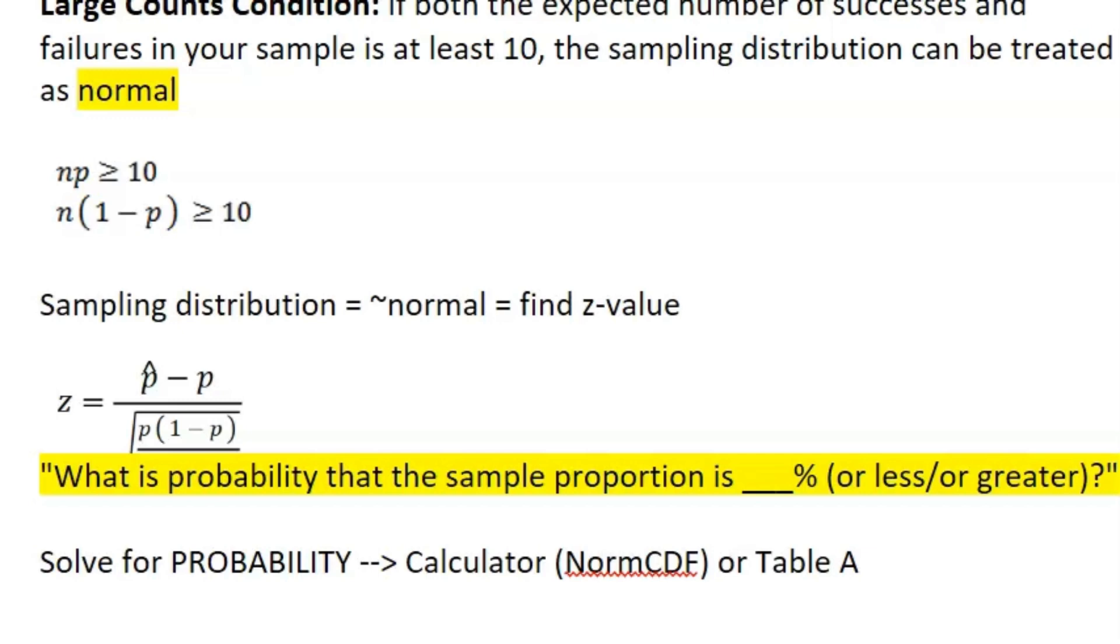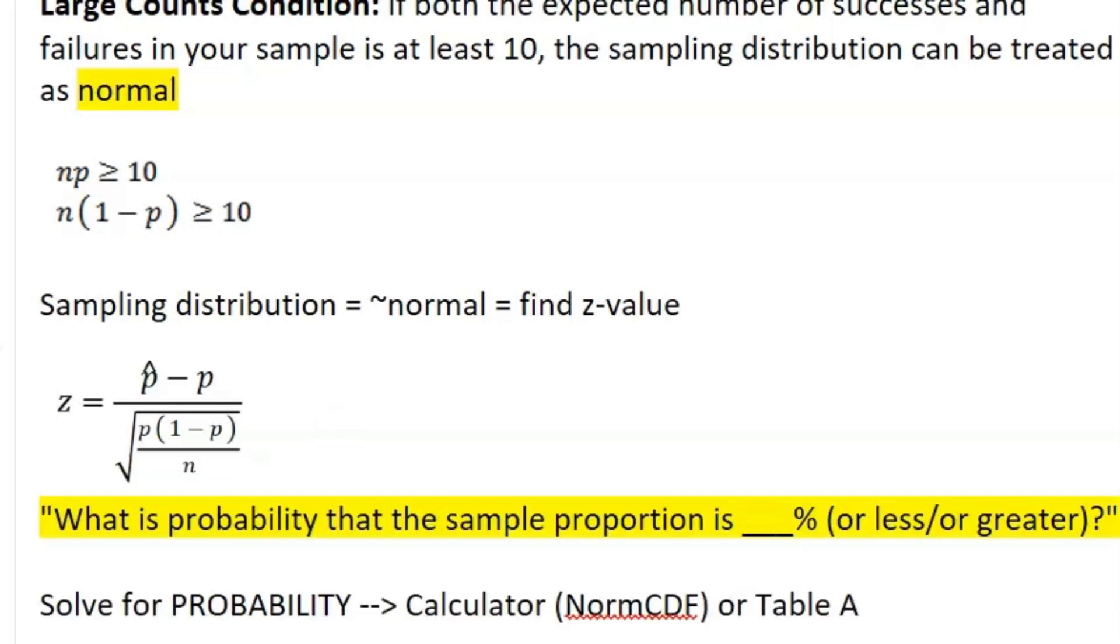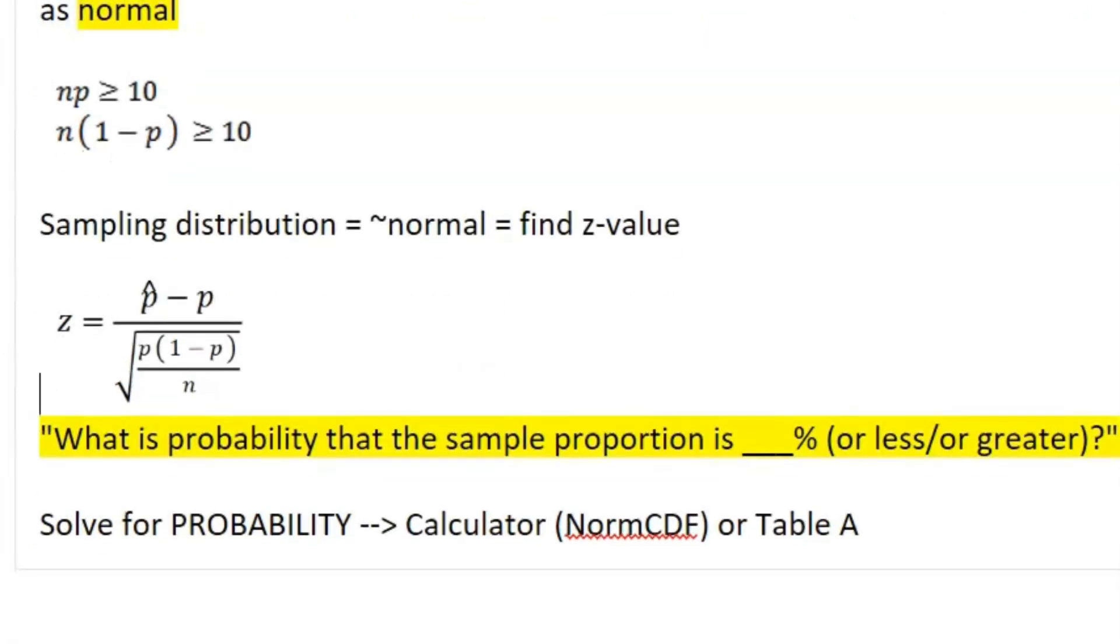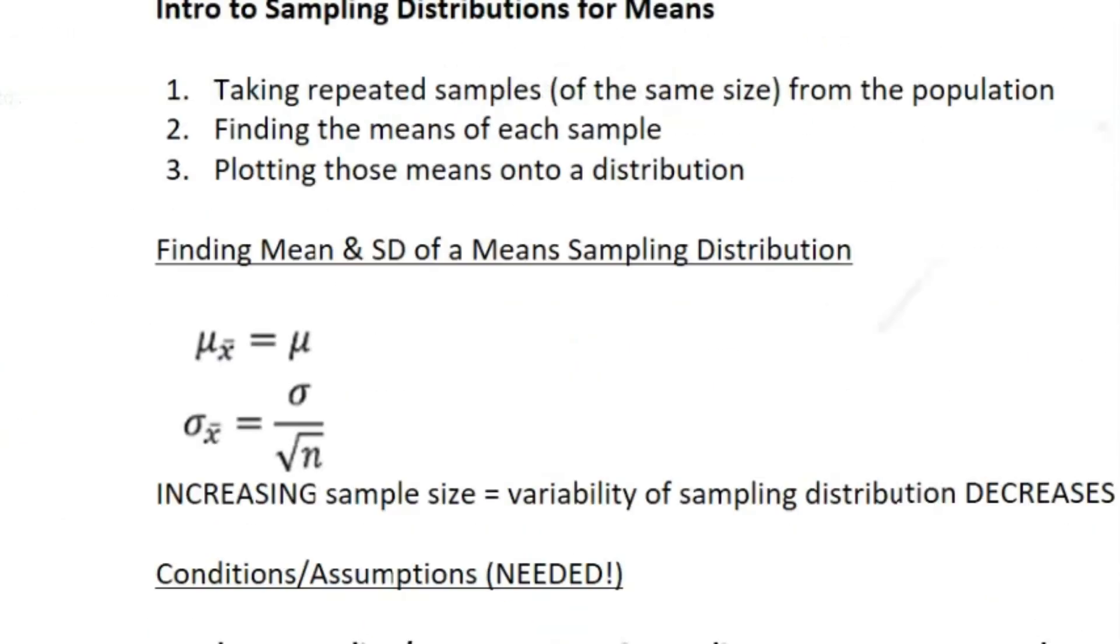A lot of times these questions will say, what is the probability that the sample proportion is blank percent, less than, equal to, or greater than? In that case, we can calculate the z-value using a formula, as you can see here—the entire formula shows—or you can just plug it into your calculator and it does all the math for you. To solve for the actual probability, you're also going to use your calculator using normal CDF, or you can use table A.